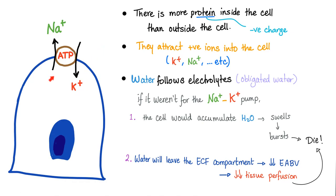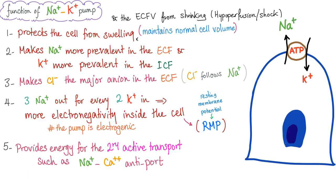Moreover, when water flows into the cell in large amounts, there is less water in the extracellular fluid, leading to extracellular fluid volume depletion. This decreases effective arterial blood volume, leading to decreased tissue perfusion — a condition we call shock. That's why the sodium-potassium pump is crucial: without it, your cell will burst and your ECF will get depleted. The pump protects the cell from swelling by pumping more sodium out than potassium in, so the net result is more positive outside — protecting you from shock.